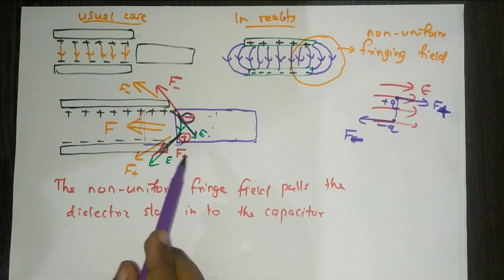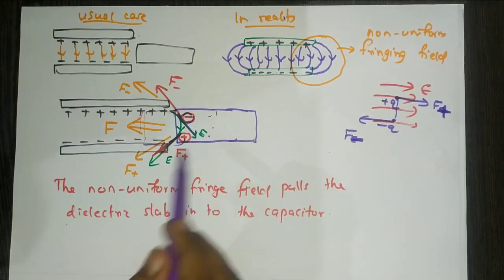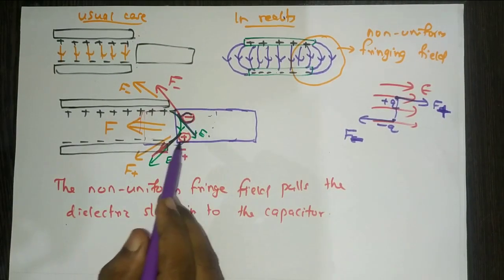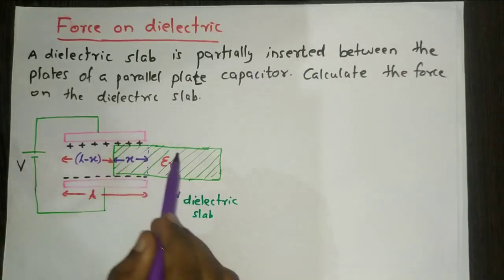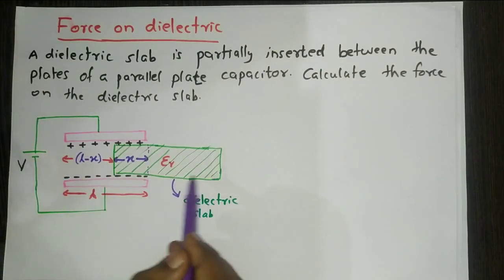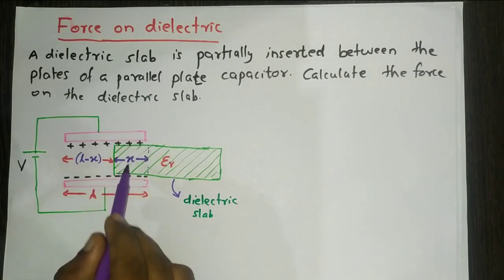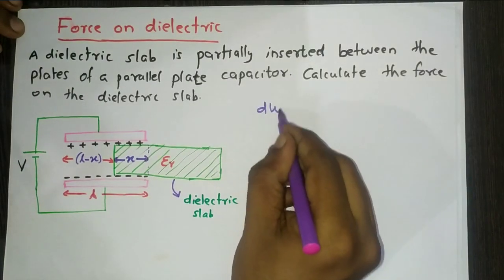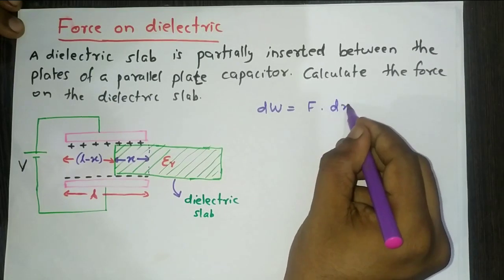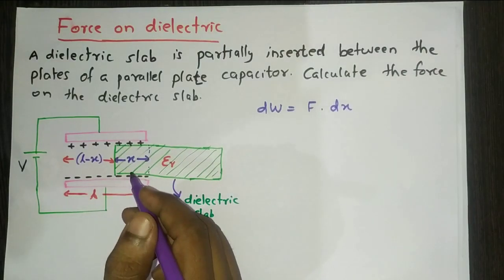Now let me explain what is the amount of this force experienced by this dielectric slab — how do we calculate this force. We can use the energy method. The work done by this electrostatic force can be written as dW = F · dx, where dx is the distance moved. This F is the force exerted by the capacitor plates on the dielectric slab. Since force and direction are along the same direction, this is positive, therefore the force can be written as F = dW/dx.